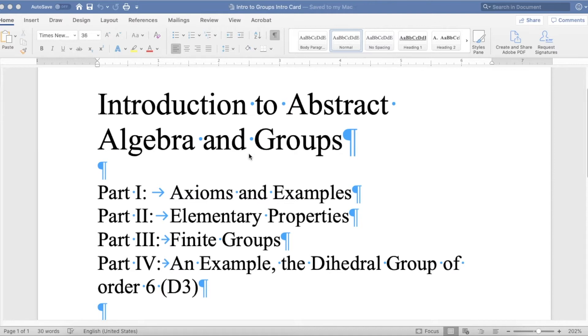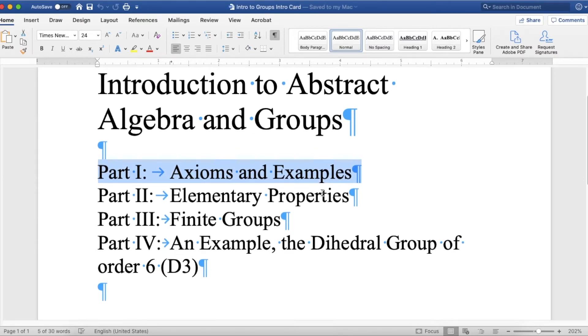Okay, that is it for part one, which is just the axioms and some examples, as you just watched. So, next up will be some elementary properties that we can derive from what we just learned, and then we'll get into finite groups and an example.